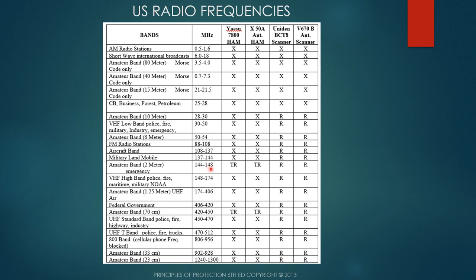The two-meter band runs 144 to 148 megahertz — you can transmit and receive on this with these radios and antennas. There's also an amateur 70-centimeter band. Being able to communicate with the outside is important. Keep in mind ham radio is the only way you can communicate station-to-station directly without going through any satellite. If you get the antenna up high enough, you can talk hundreds of miles.